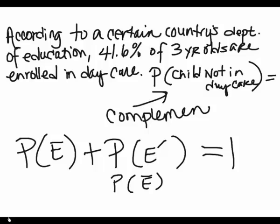If you have a 20% chance that it's going to rain today, then what's the complement of that? Well, then I have an 80% chance that it's not going to rain today. And that would be its complement, because 80 plus 20 equals 100%, or 0.2 plus 0.8 equals 1. So if you have a 41.6% chance of a 3-year-old being enrolled in daycare, then what is the probability that the child would not be in daycare?